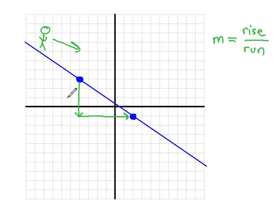Notice the rise actually went down. We can represent that down of 1, 2, 3, 4, with the rise of negative 4. Then we go to the right, 1, 2, 3, 4, 5, 6. This is a run of positive 6.